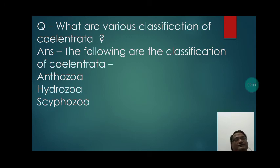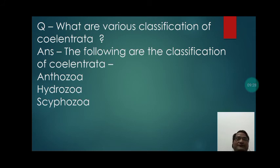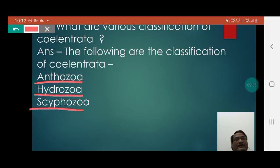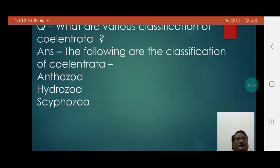Now let us discuss the important question: what are the various classifications of Coelenterata? The classifications of Coelenterata are Anthozoa, Hydrozoa, and Scyphozoa. Today we studied about Coelenterata.